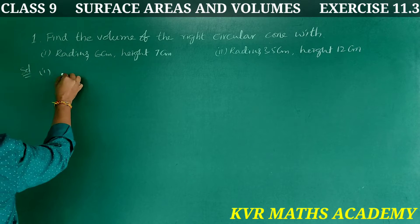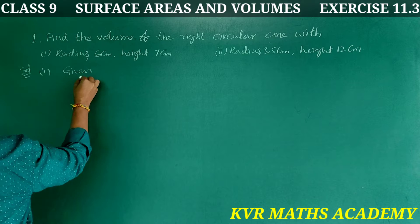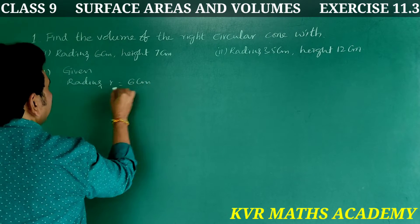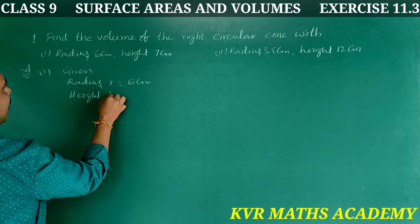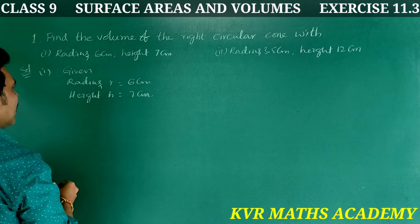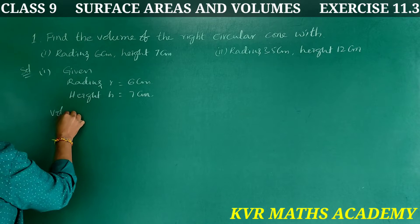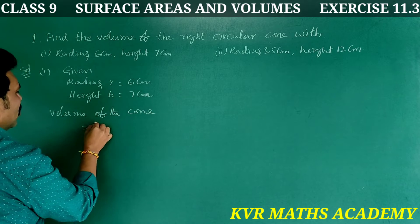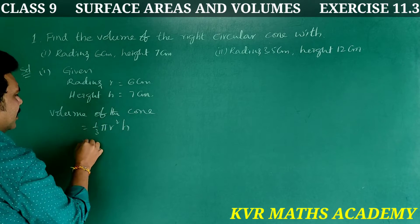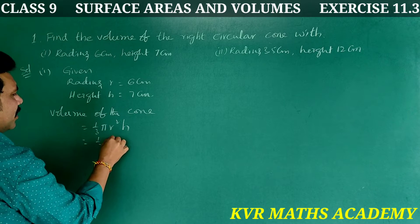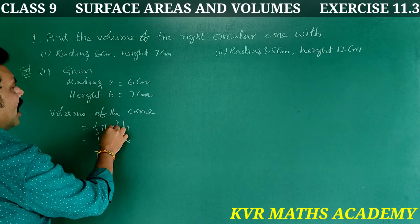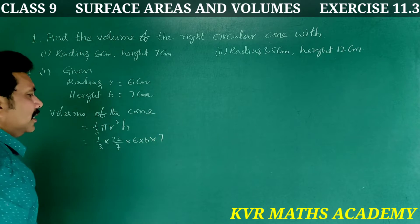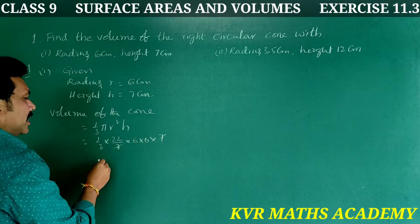First one. Given: radius r = 6 cm, height h = 7 cm. Volume of the cone = (1/3)πr²h = (1/3) × (22/7) × 6 × 6 × 7.